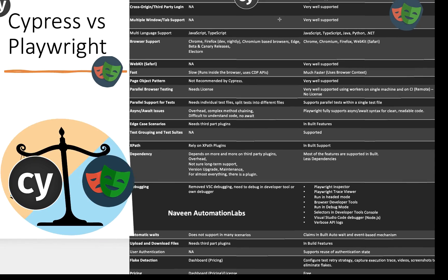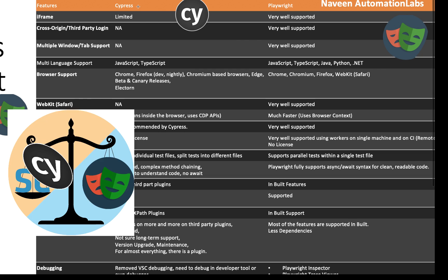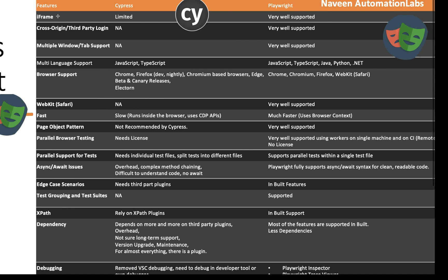Let's start with the first comparison: iframe. Iframe can sometimes be a major problem in different applications — for example, when your username, password, or account information is available inside an iframe. With Cypress, it's a very limited feature and sometimes not possible at all to deep-dive into an iframe. But with Playwright, it's very well supported. Iframe support was a major drawback of Cypress — there are some hacks available, but otherwise you cannot handle it.